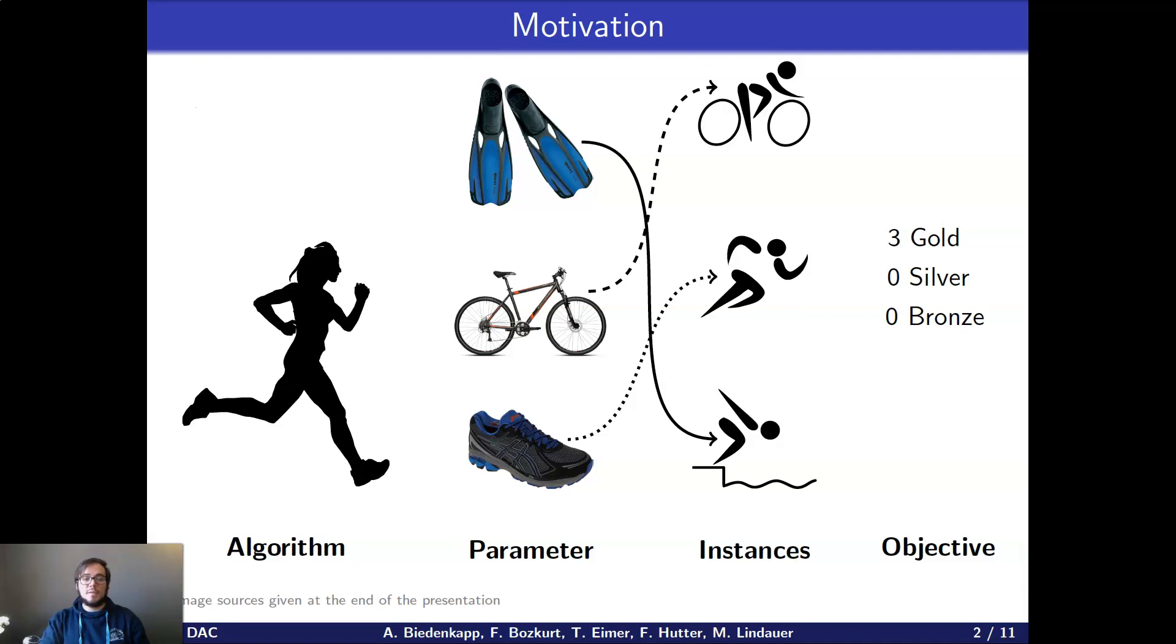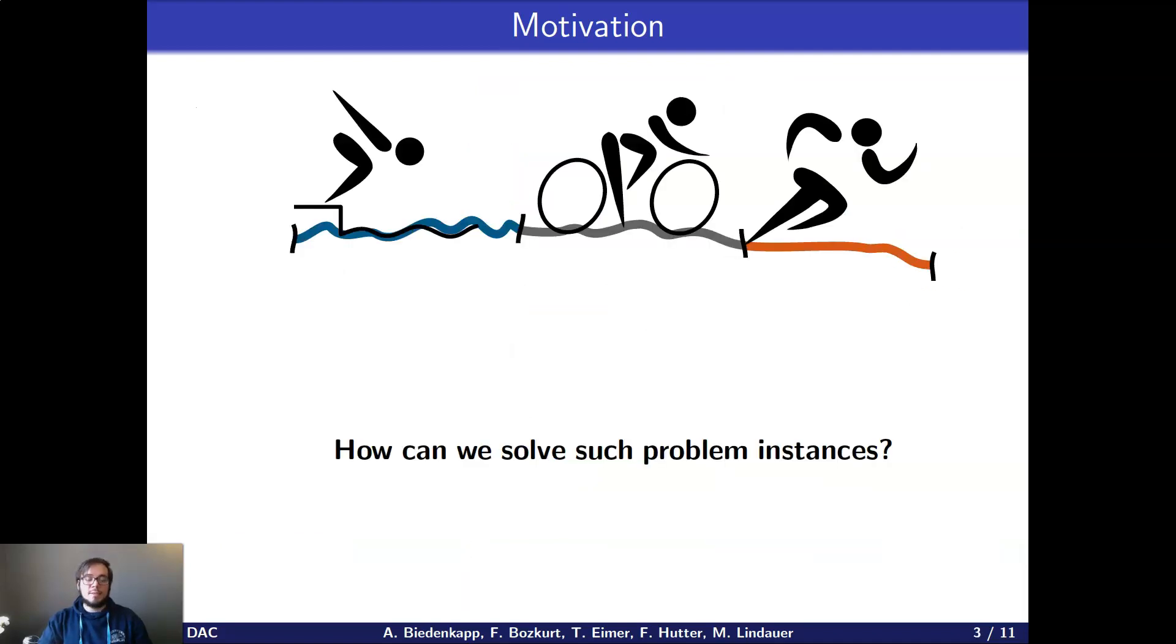And you might ask yourself, why would we need anything else? And this is best answered with this example, because in AI in general, we are dealing with a lot of iterative algorithms. And if we just treat these algorithms as a black box and assume that they just need this one parameter configuration and never go through different stages, then we could just simply use algorithm configuration. But in practice, because of their iterative nature, they go through these different stages. And thus potentially different parameter configurations are optimal at different stages.